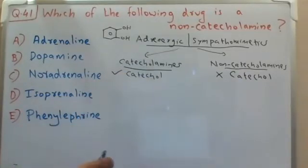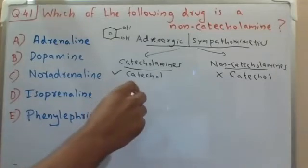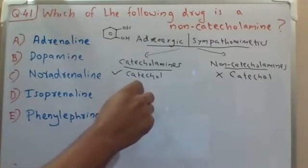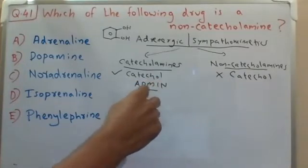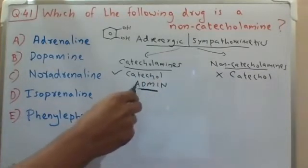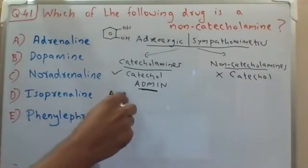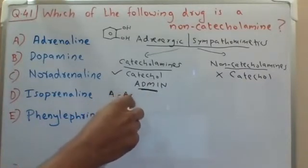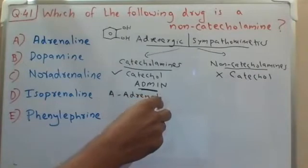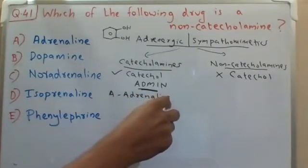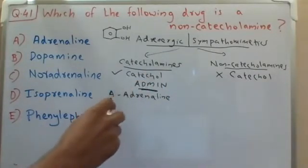You should remember which drugs fall under the catecholamine category using the mnemonic ADMIN. A stands for adrenaline — adrenaline contains the catechol nucleus, so it comes under the catecholamine category. D stands for dopamine.